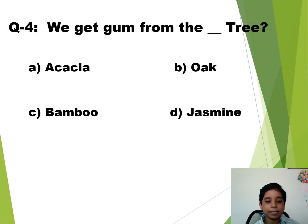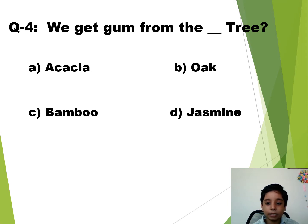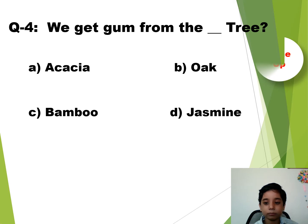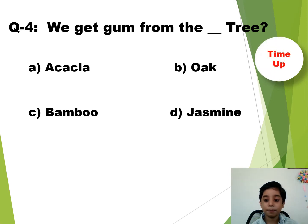Question number 4. We get gum from the dash tree. The time starts now. Time up. So the answer is A — Acacia.